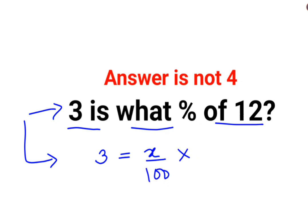And of means multiplication 12. So next what we need to do is to find the value of x. We will multiply both sides by 100 and divide both sides by 12.